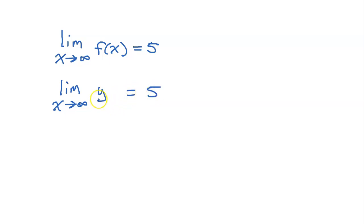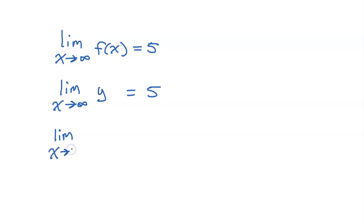I can do various things to both sides of this equation. For example, let's say I squared both sides. This would still be a valid limit. So I could have the limit as x approaches infinity of y squared equal to 25.